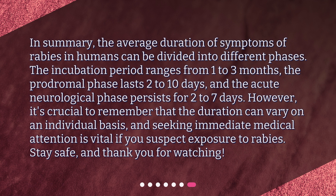In summary, the average duration of symptoms of rabies in humans can be divided into different phases: the incubation period ranges from 1 to 3 months, the prodromal phase lasts 2 to 10 days, and the acute neurological phase persists for 2 to 7 days. However, it's crucial to remember that the duration can vary on an individual basis, and seeking immediate medical attention is vital if you suspect exposure to rabies. Stay safe, and thank you for watching.